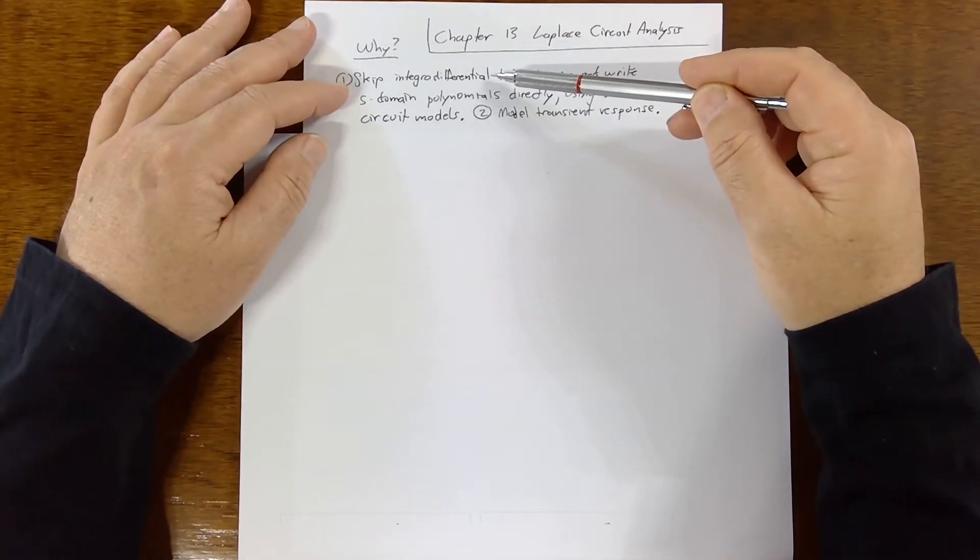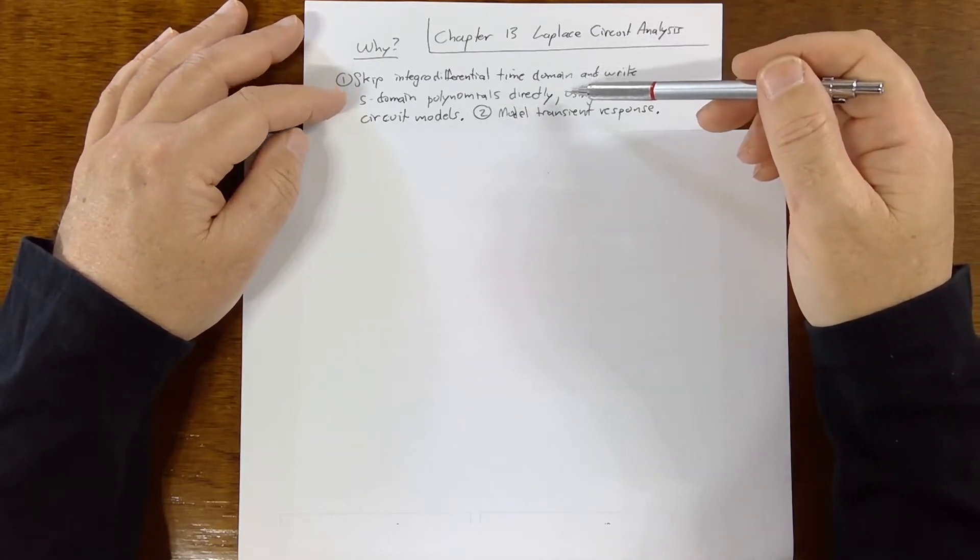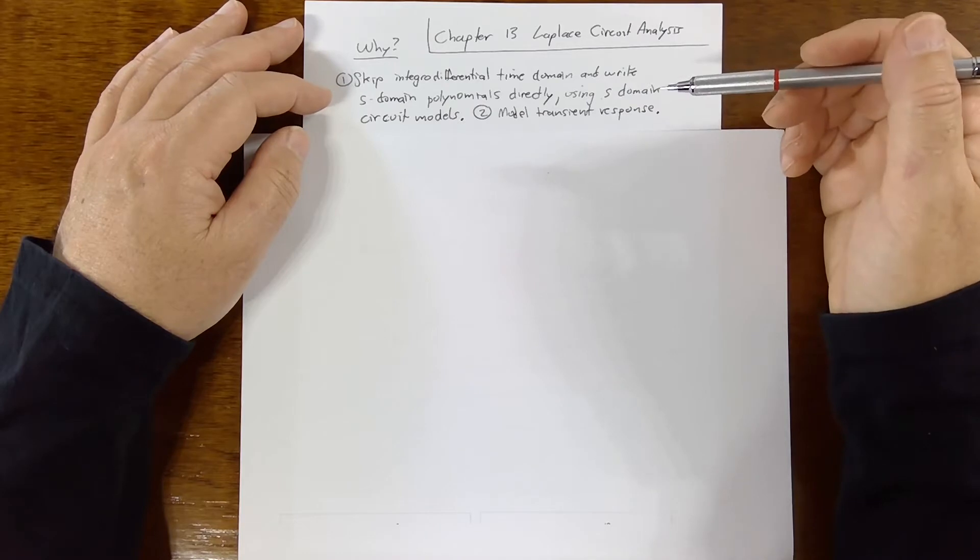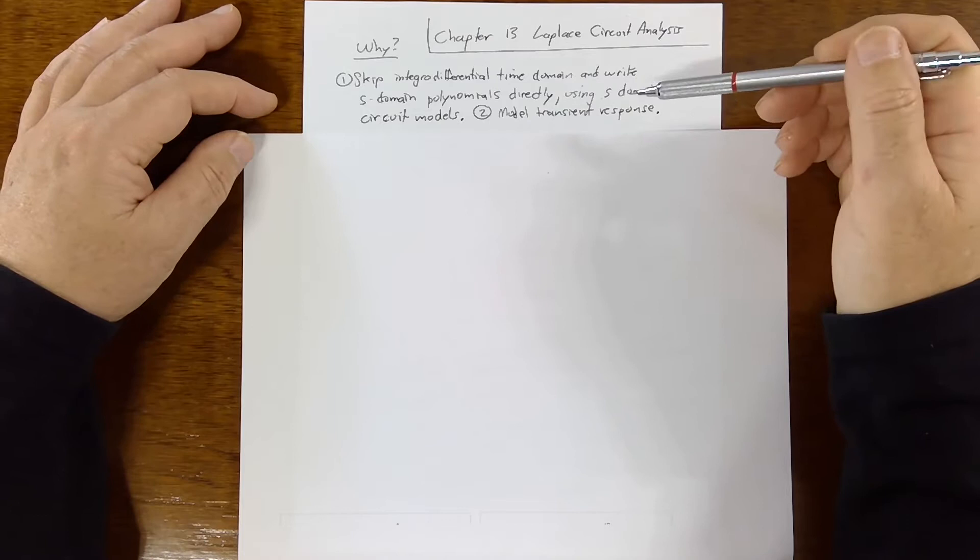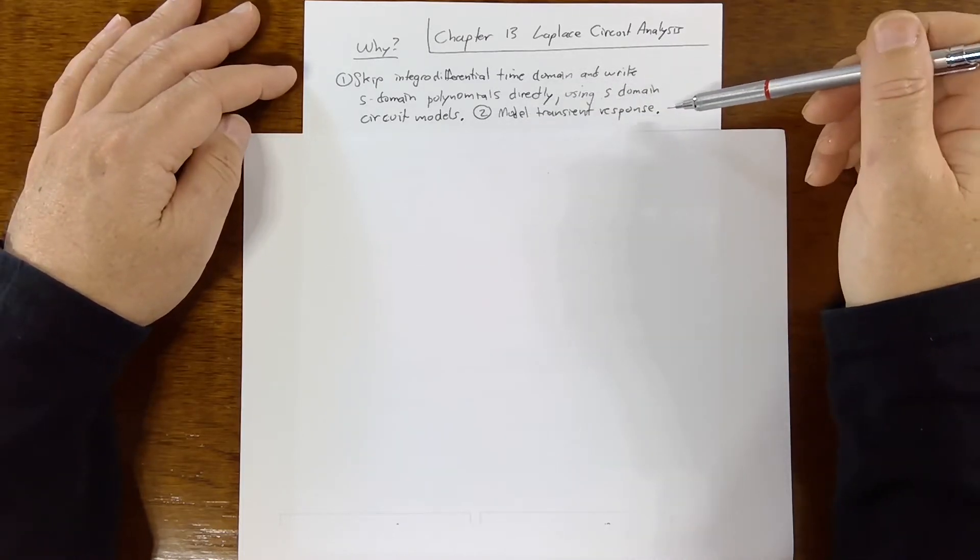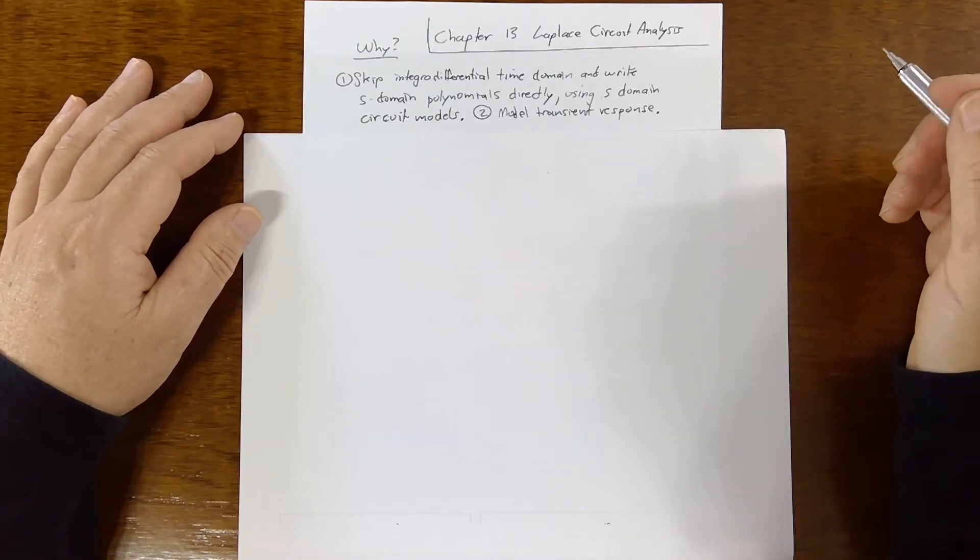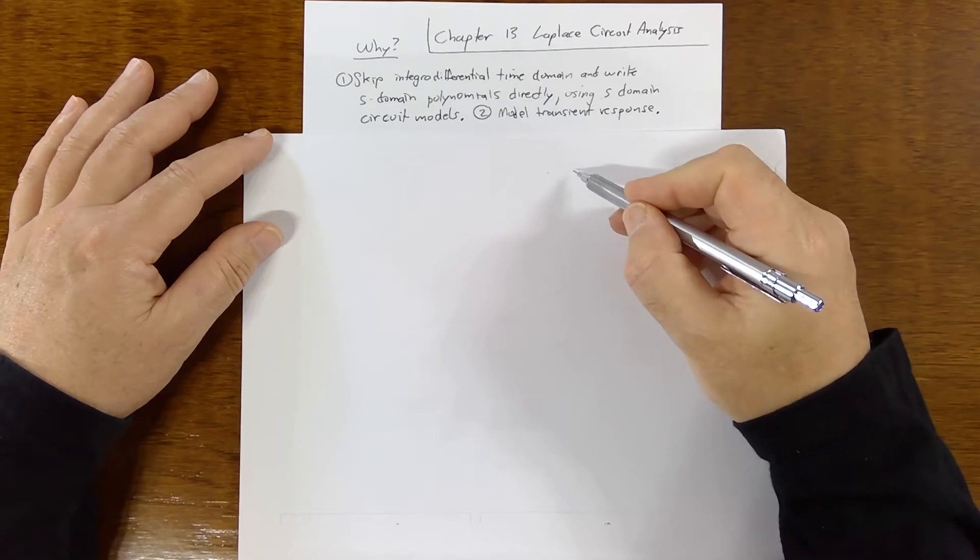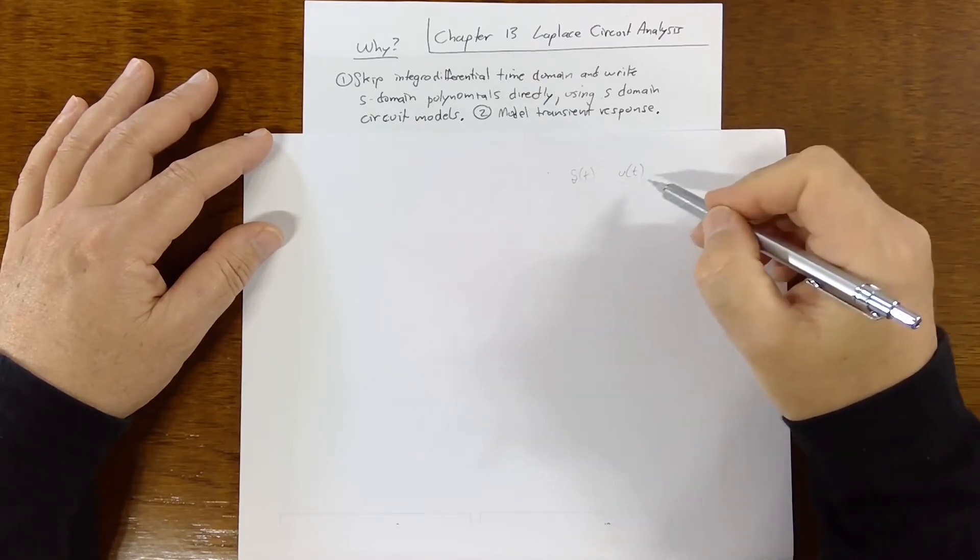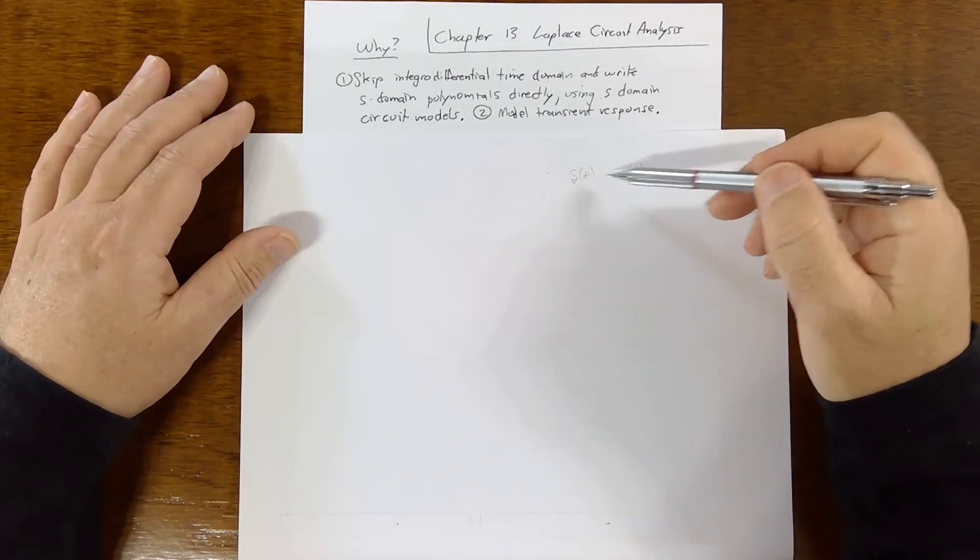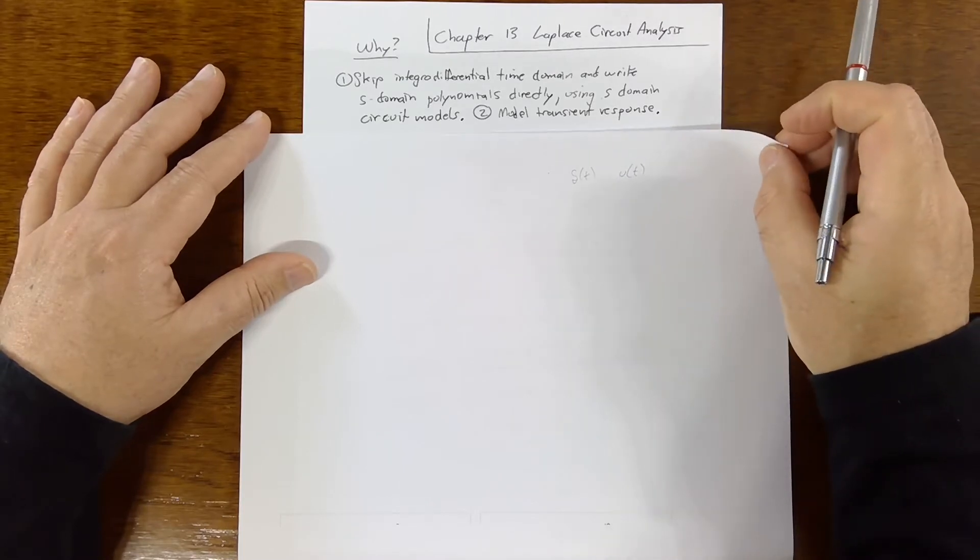So why? Well, algebra is easier than calculus. That's about the main reason. So we want to be able to get rid of integral differential time domain equations, integrals and derivatives, and just use s domain polynomials directly because that can be easier than using calculus. Mostly I want to talk about some other things.